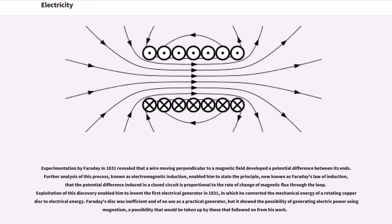Faraday's homopolar motor consisted of a permanent magnet sitting in a pool of mercury. A current was allowed through a wire suspended from a pivot above the magnet and dipped into the mercury. The magnet exerted a tangential force on the wire, making it circle around the magnet for as long as the current was maintained. Experimentation by Faraday in 1831 revealed that a wire moving perpendicular to a magnetic field developed a potential difference between its ends. Further analysis of this process, known as electromagnetic induction, enabled him to state Faraday's law of induction: that the potential difference induced in a closed circuit is proportional to the rate of change of magnetic flux through the loop. Exploitation of this discovery enabled him to invent the first electrical generator in 1831, in which he converted the mechanical energy of a rotating copper disk to electrical energy. Faraday's disk was inefficient and of no use as a practical generator, but it showed the possibility of generating electric power using magnetism.